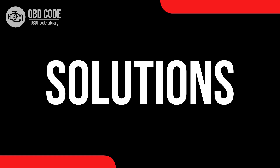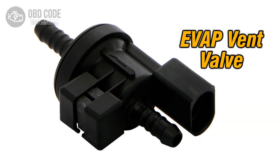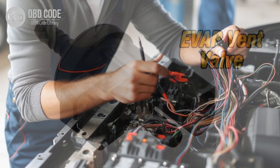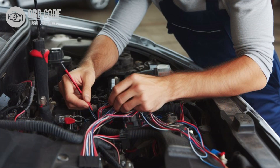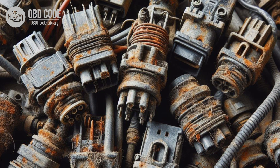Code Solutions P0499: 1. Test the evaporative emission vent valve for proper operation. Replace the vent valve if it is faulty. 2. Check for a short to power in the vent valve control circuit. Repair any short circuits as necessary. 3. Inspect the wiring and connectors in the vent valve control circuit for damage, corrosion, or loose connections. Repair or replace any damaged components as needed. 4. Check for any corrosion or poor electrical connections in the vent valve control circuit. Clean or repair as necessary.